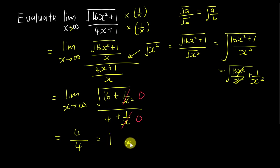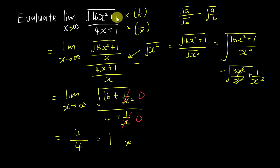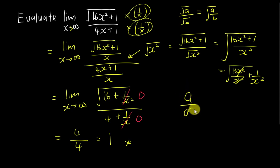This kind of question is a bit unusual for SPM but very normal for STPM, A-Level, or any pre-university syllabus. Whenever x goes to infinity and x is in the numerator, remember to multiply by 1 over x to move x to the denominator, because any number divided by infinity equals 0. I hope this explanation helps — see you in the next video!